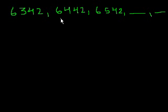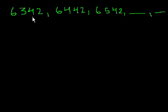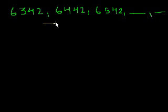Well, let's see. What's happening is we go from 6,342 to 6,442. What happened? It looks like the only difference is the 3 became a 4 in the hundreds place. So we had one more hundred — essentially, we added 100 here. Another way to add 100 is to increment the hundreds digit by 1.